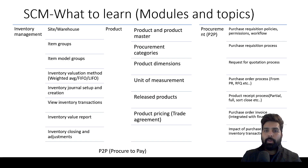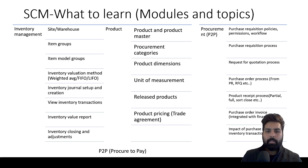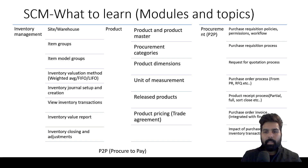The next core Supply Chain module is Product Information. Learn about products and the product master, the difference between the two, procurement categories, product dimensions, units of measurement, how released products are created, the difference between product, product master, and released product, and product pricing — how sales prices and purchase prices can be defined for your product master.